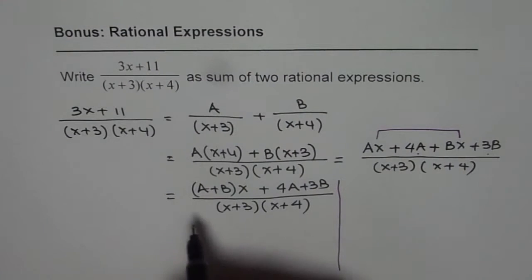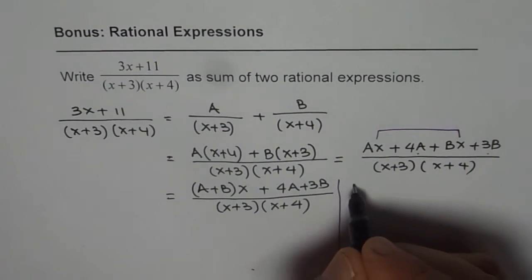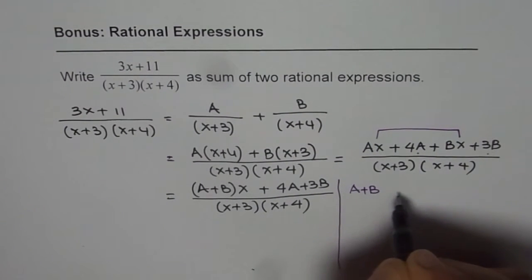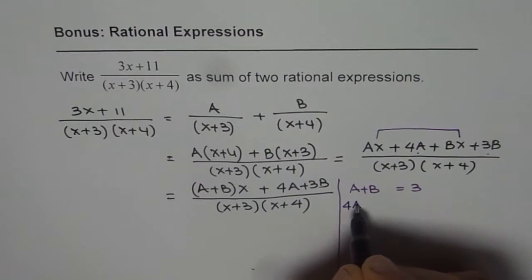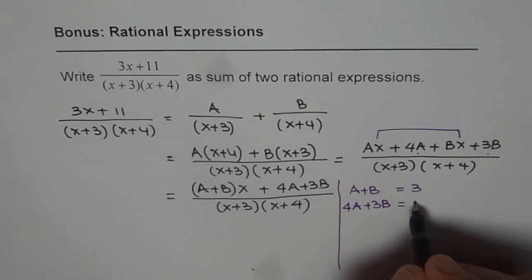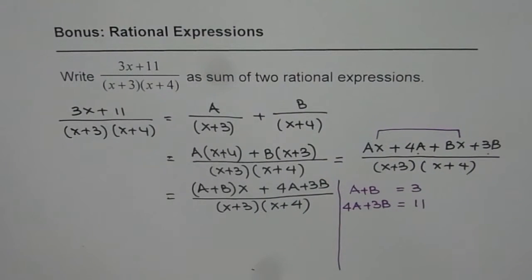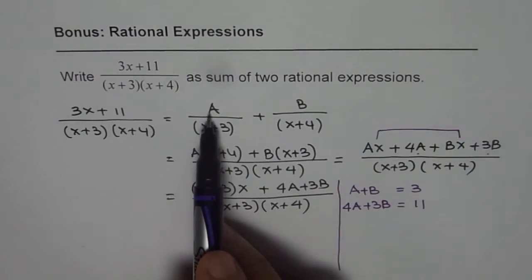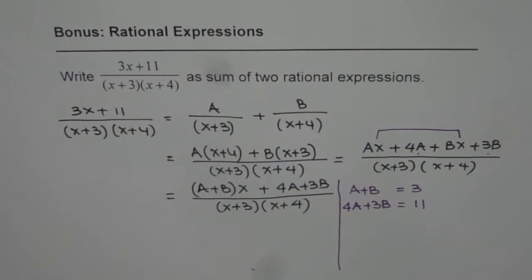So now what we will do is we will solve the equations which is A plus B equals 3 and 4A plus 3B equals 11. These two equations should help us find the value of A and B and then we can substitute those values and get our answer.